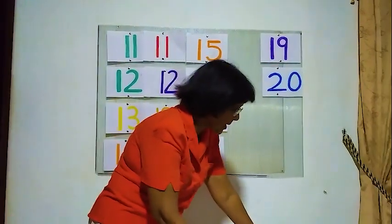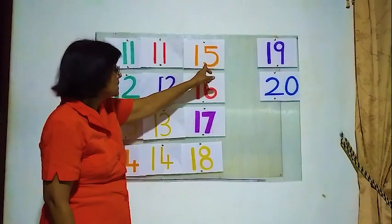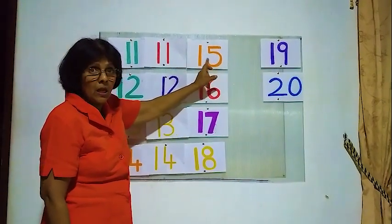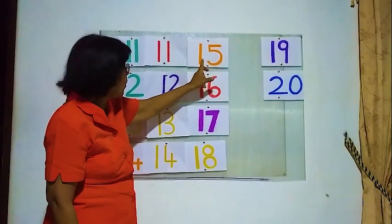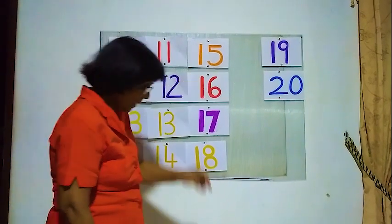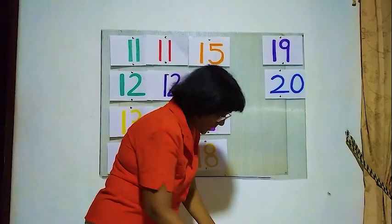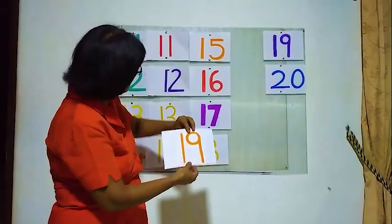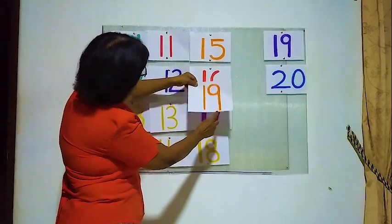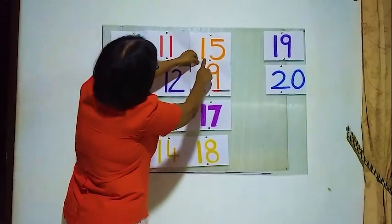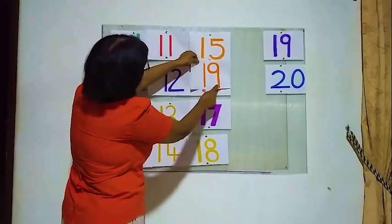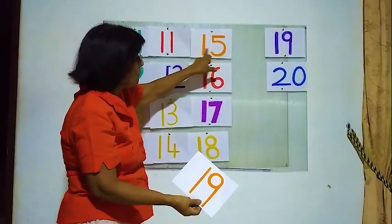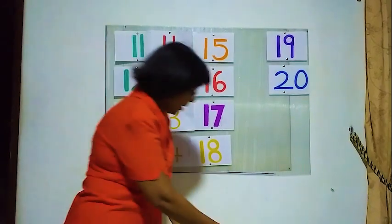We will go to the next number. What is this number? 1 and 5 — 15! 1 and 5, we will have to find number 15. Is this number 15? Is this number 15? 1 and 9 — this is 1 and 5, this is 1 and 9 — is this correct? No. We have to find 15.